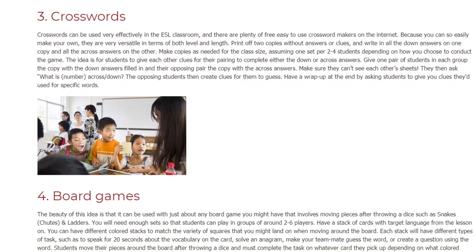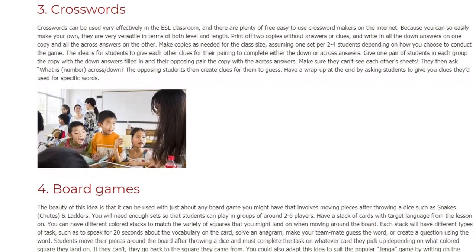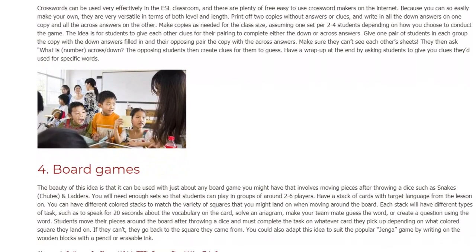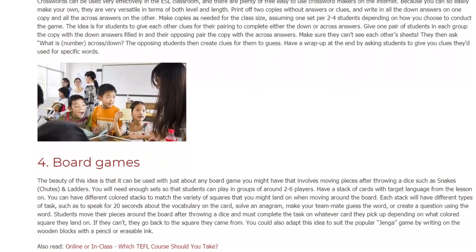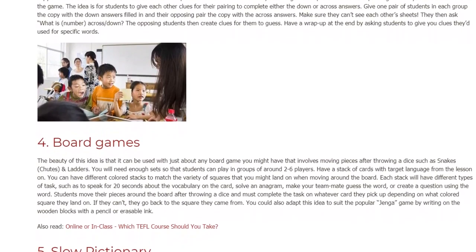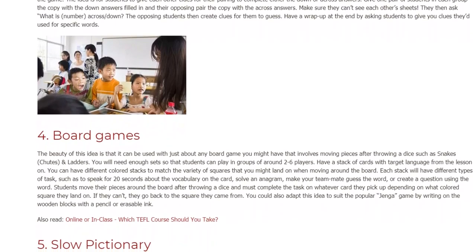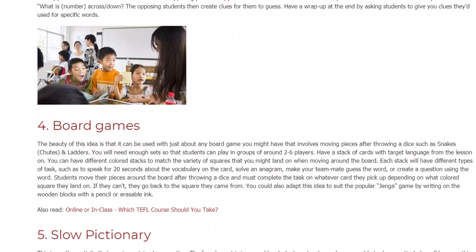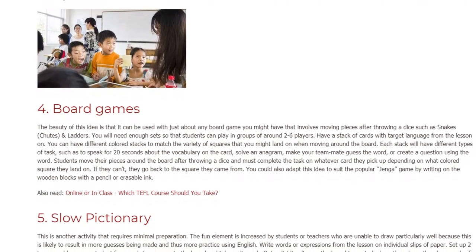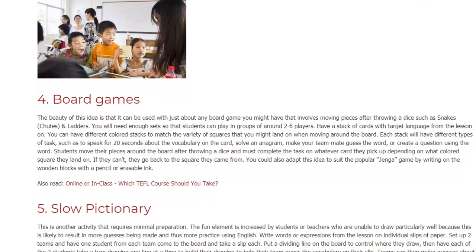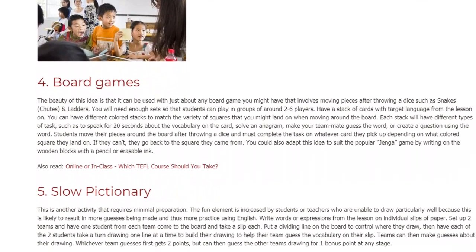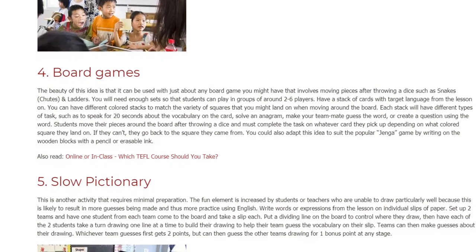4. Board Games. The beauty of this idea is that it can be used with just about any board game that involves moving pieces after throwing a dice, such as Snakes and Ladders. You will need enough sets so that students can play in groups of around 2–6 players. Have a stack of cards with target language from the lesson. You can have different colored stacks to match the variety of squares that you might land on when moving around the board. Each stack will have different types of task, such as to speak for 20 seconds about the vocabulary on the card, solve an anagram, make your teammate guess the word, or create a question using the word. Students move their pieces around the board after throwing a dice and must complete the task on whatever card they pick up depending on what colored square they land on.